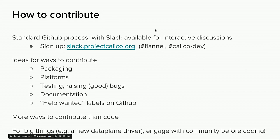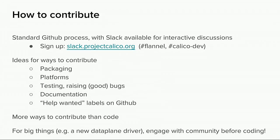Now I want to talk about how you can contribute to these projects. They both follow a standard GitHub process — fork the project, make your changes, submit a pull request, and a maintainer will review and merge it if it's good. We use GitHub for issues — bugs, support requests, and enhancements are all tracked there. We also have Slack for interactive discussions. You can sign up at slack.projectcalico.org, and there are Flannel and Calico dev channels for discussing those projects.